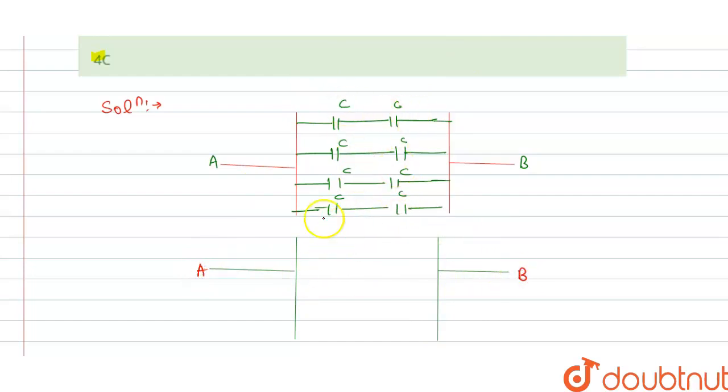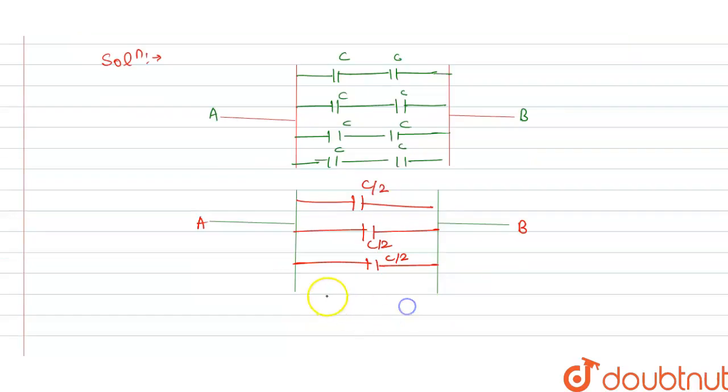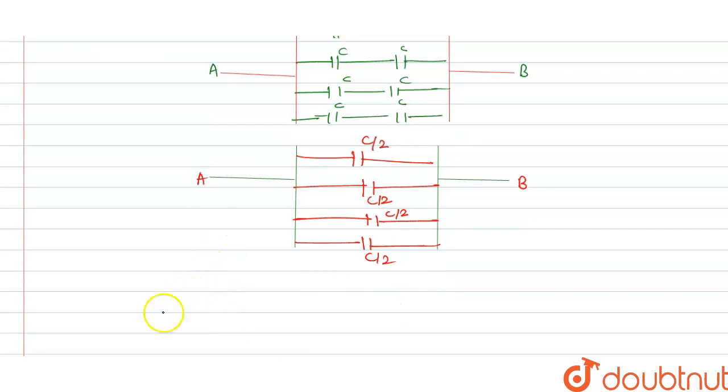So they are connected in parallel. So we can write here, this is C by 2. Similarly, this is C by 2. Similarly, this is C by 2, and this is equivalent C by 2, capacitance C by 2.